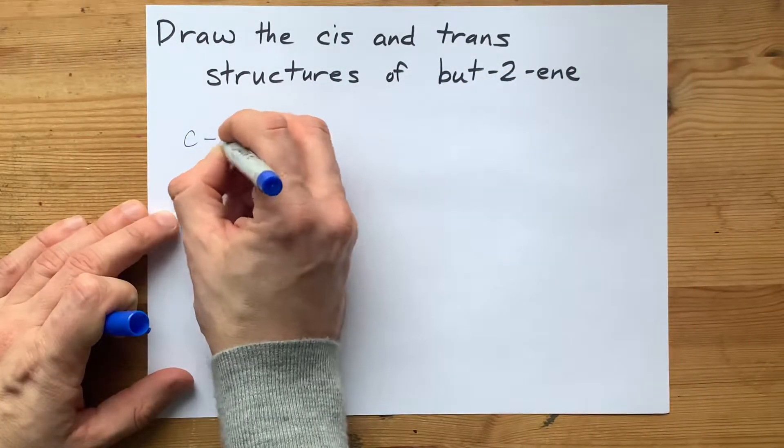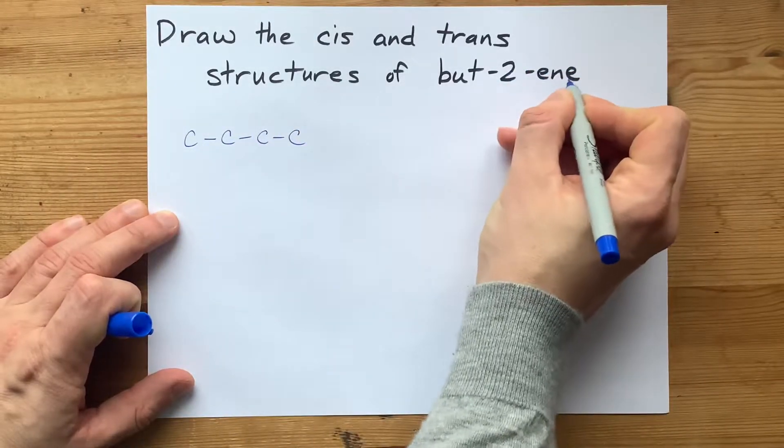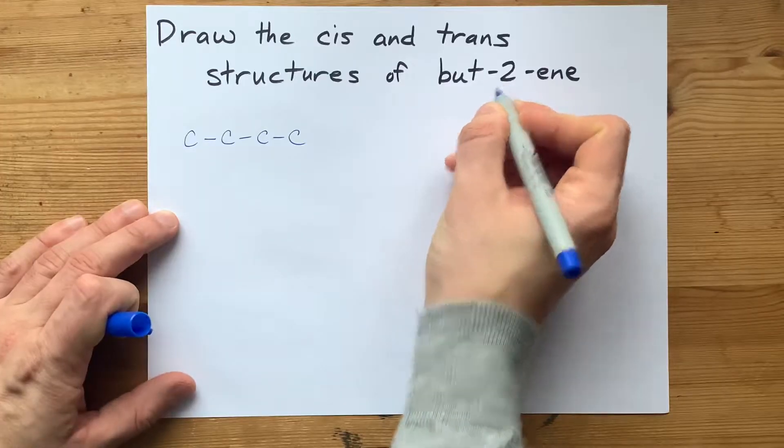Butene is four carbons in a row. The 2-ene means that there is a double bond starting at the second carbon.